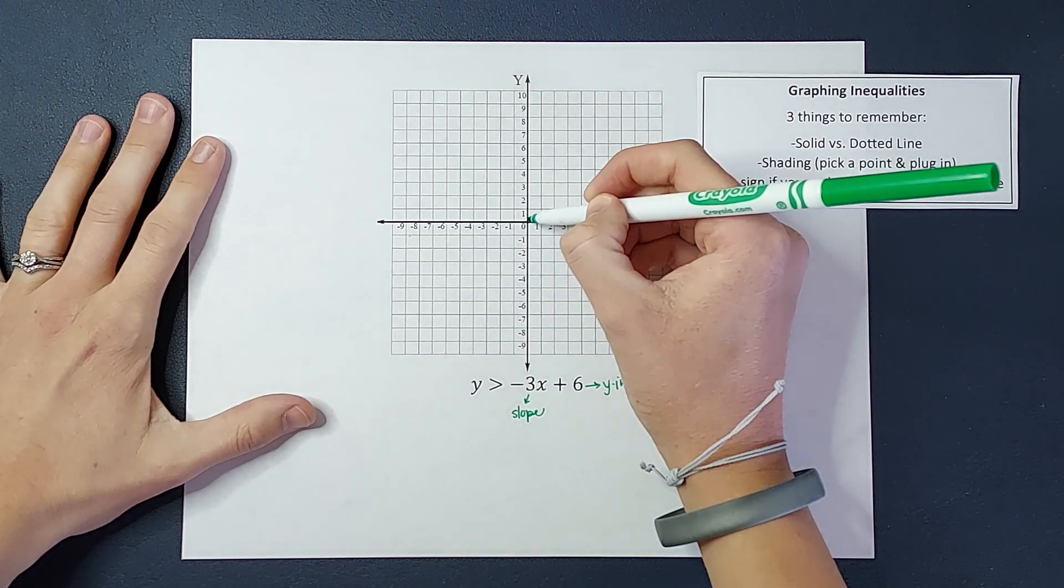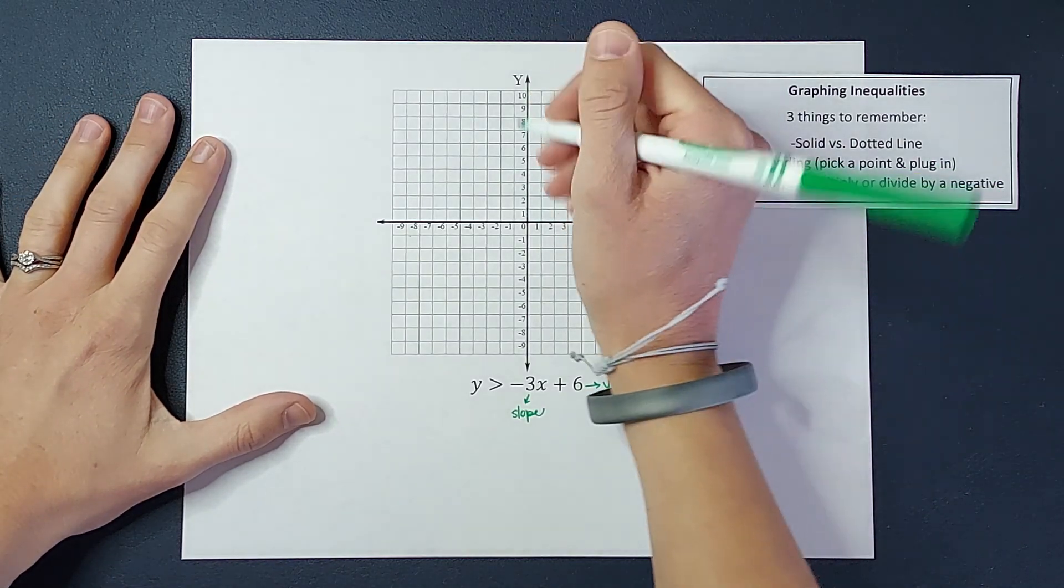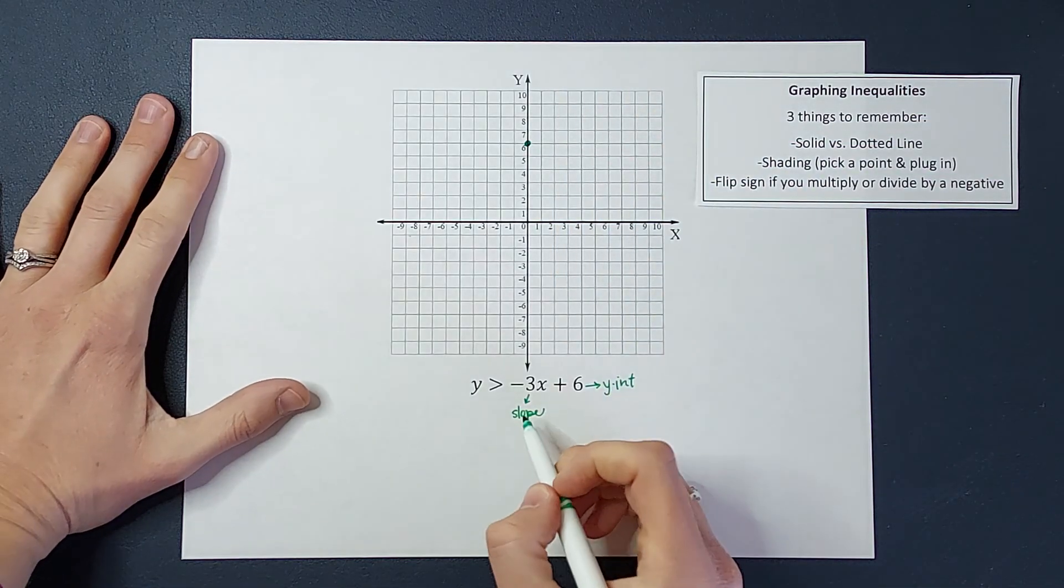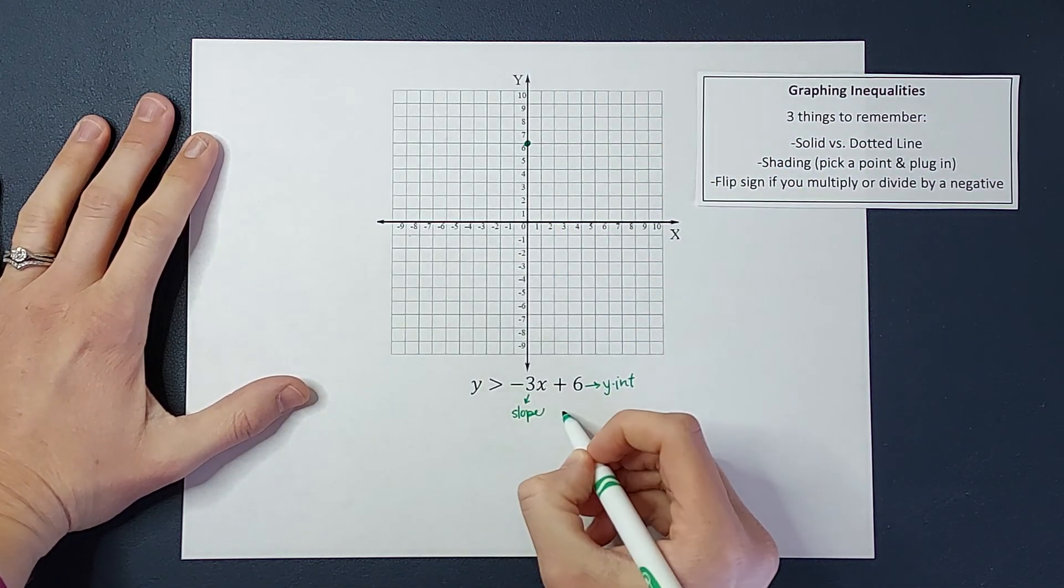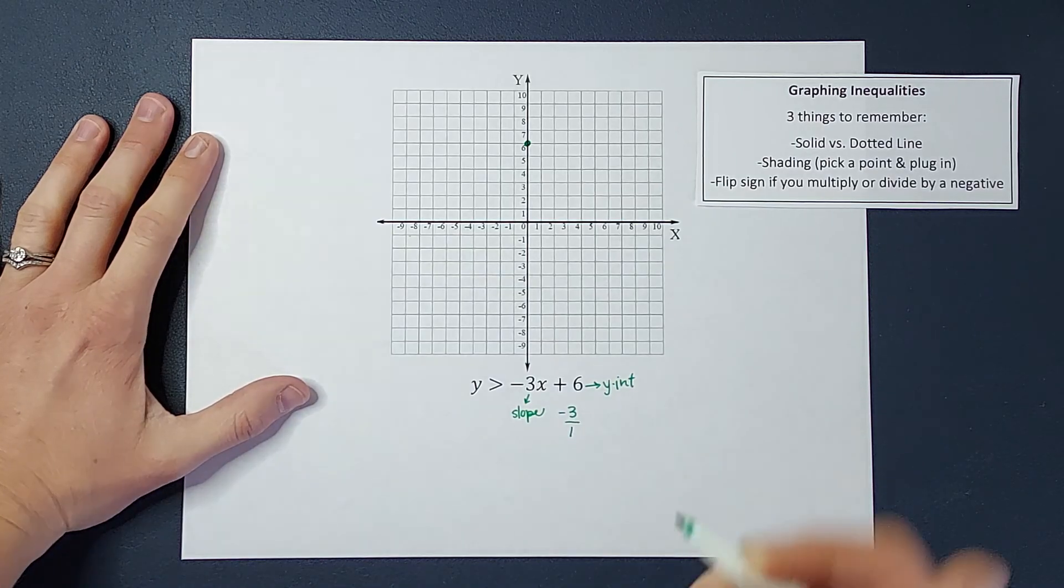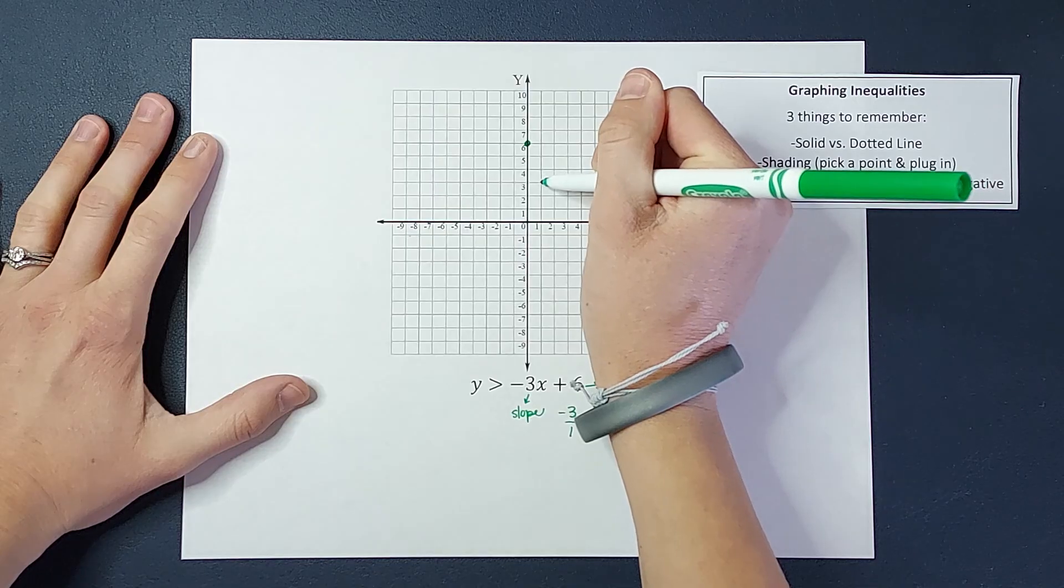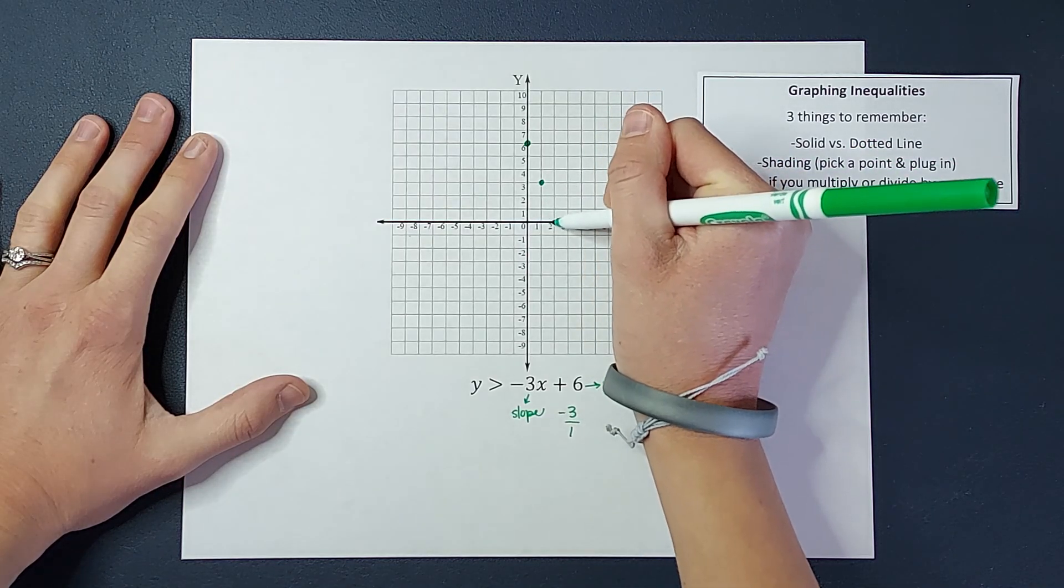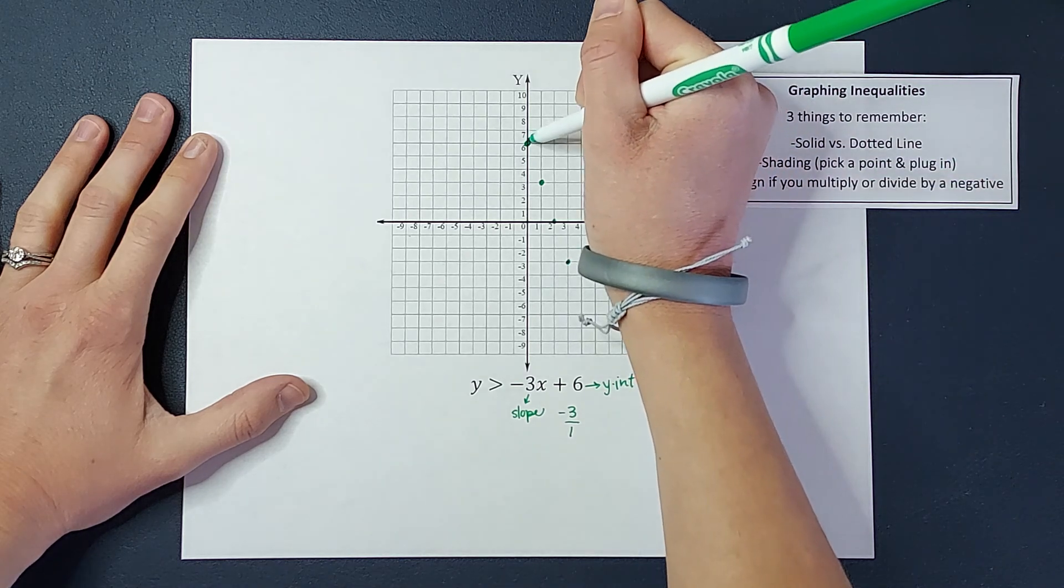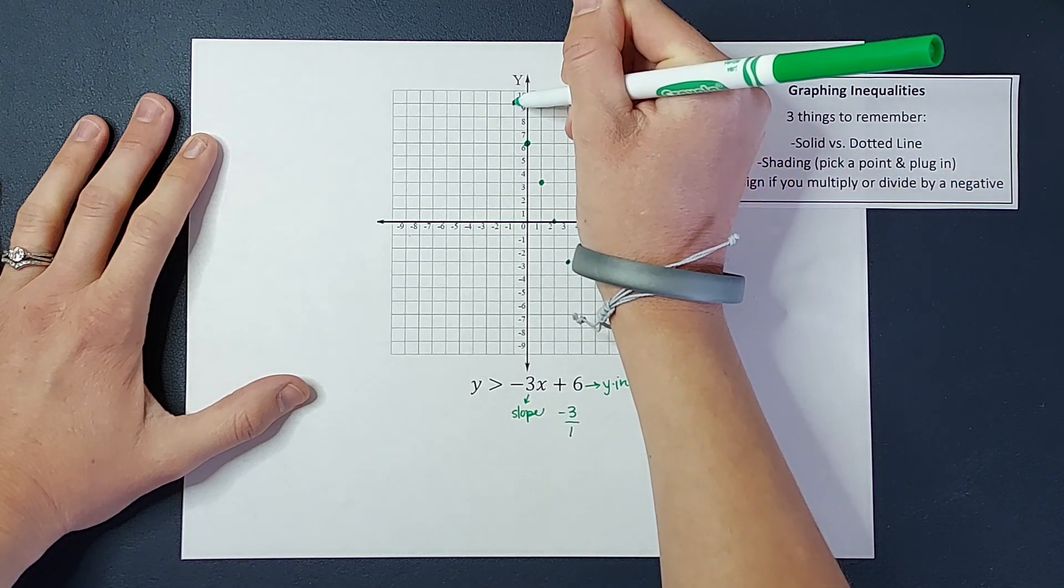My y-intercept is 6, so I'm going to go up 1, 2, 3, 4, 5, 6. That's where my line crosses the y-axis, and my slope is negative 3, or we can think of it as negative 3 over 1. So I'm going to go down 3, right 1, down 3, right 1. I can keep going if I want. I can also go the other direction by going up 3, left 1.